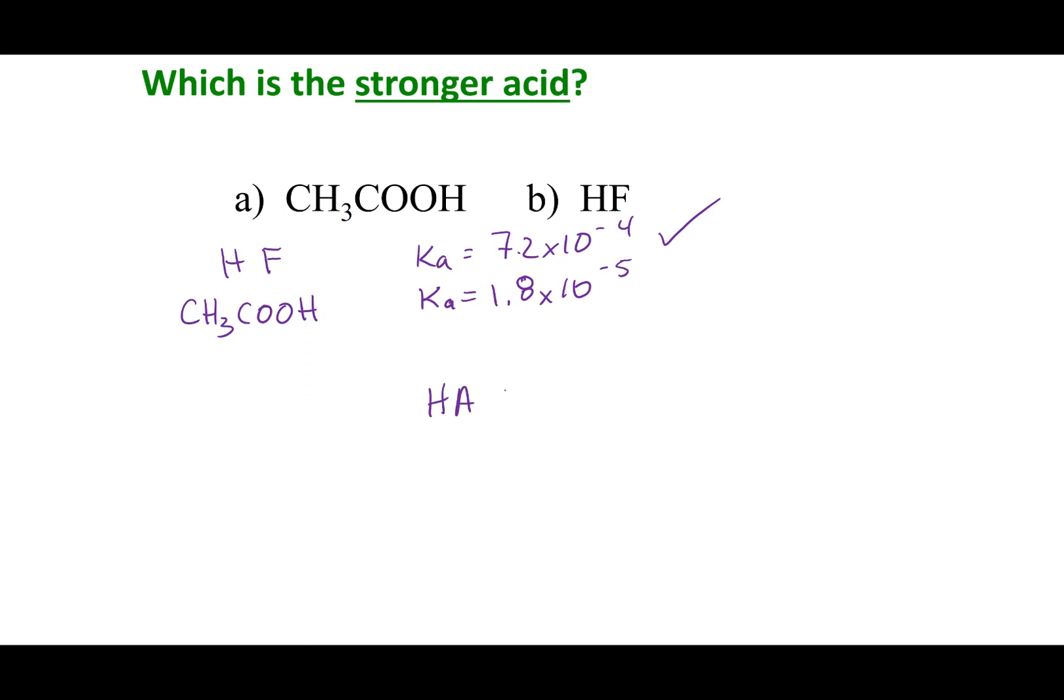So, remember, if I were to look at an acid breaking up, this is the acid dissociation reaction. And so, if Ka is bigger, I'm making more product. And that means I'm making more H+, which means I'm making more acidic.